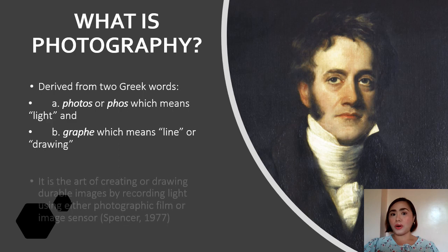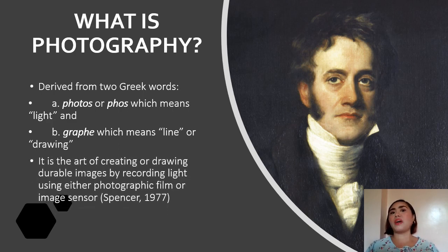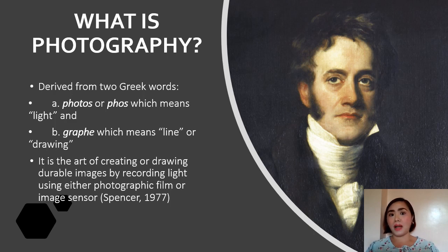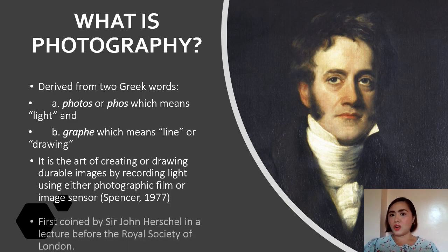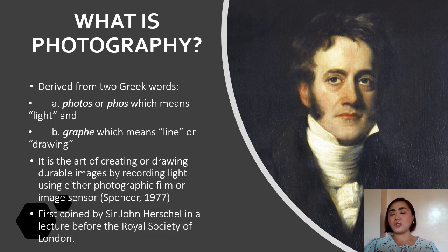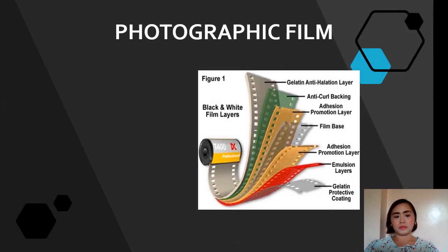Why is photography considered drawing with light? Because light or any other form of radiant energy such as ultraviolet rays are used to create durable images and record them onto a light sensitive surface. The first person who coined the word photography was Sir John Herschel, in a lecture before the Royal Society of London. Photography is defined as the process of recording image onto a light sensitive surface.